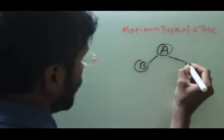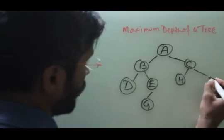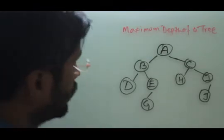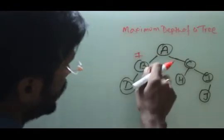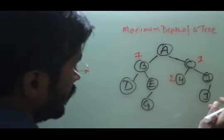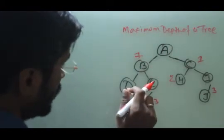Let us understand first what is depth — let's recap some of the terminology. What is the depth in a given binary tree? Depth of a tree means from a given node, what is the path to the root node. For given node B, the path to root node is 1, so the depth of B is 1. Similarly, depth for C is 1. Depth for H is 2. Depth for J is 3. Depth for G is 3. And depth for D is 2.